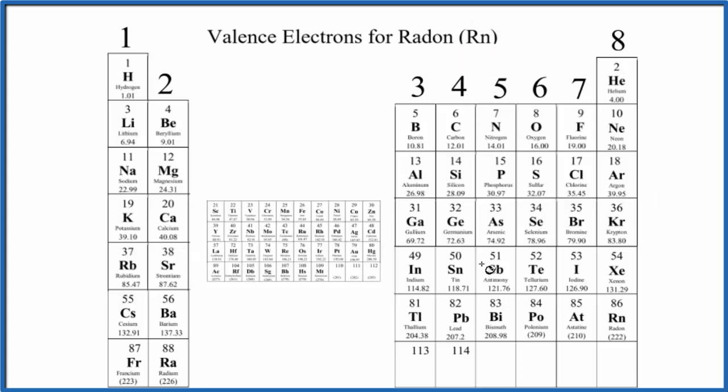We look at the periodic table here organized with the number of valence electrons. So in group 1 here, all of these have one valence electron. Group 2, two valence electrons.